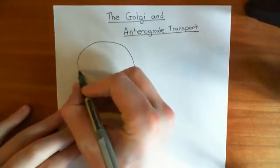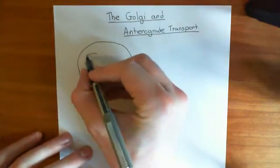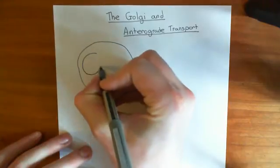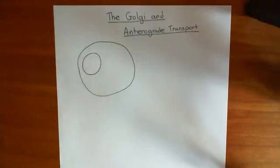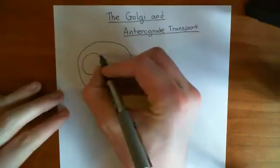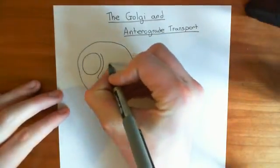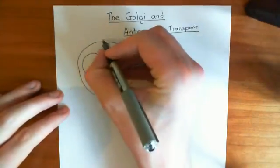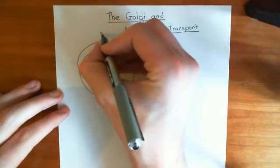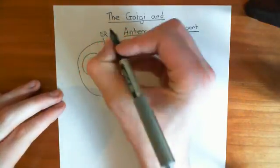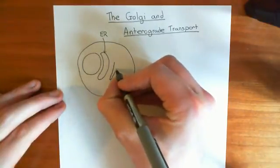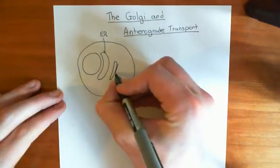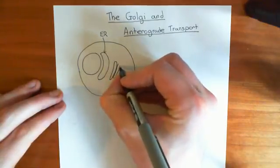We've discussed so far that if we want to get a protein either into the membrane of a cell or if we want to secrete it, it needs to firstly go to the endoplasmic reticulum — the ER for short. Then it's going to go to another organelle before it can actually be secreted, known as the Golgi.